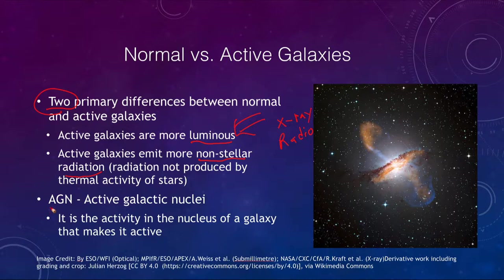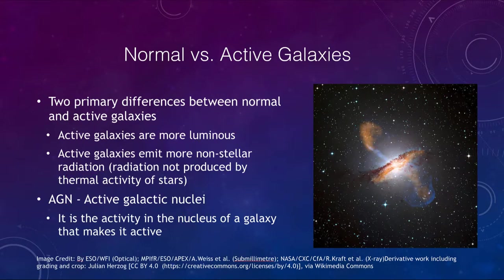We also use the term AGN, or active galactic nuclei, to talk about the activity in the nucleus of the galaxy, which in most cases is where something is going on down in the nucleus near the center — near that supermassive black hole — and that is what is causing a galaxy to become active.